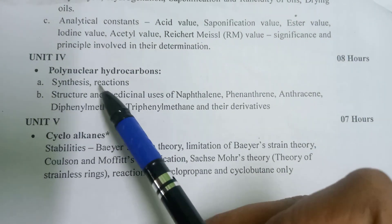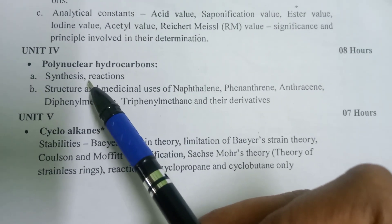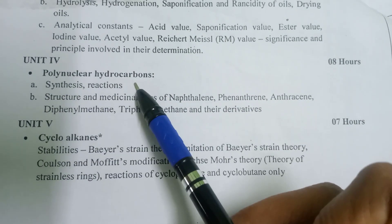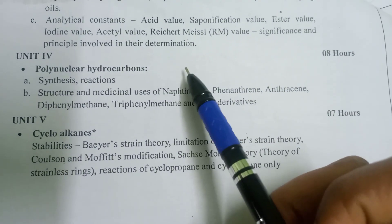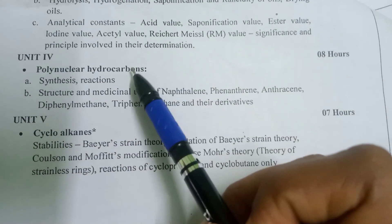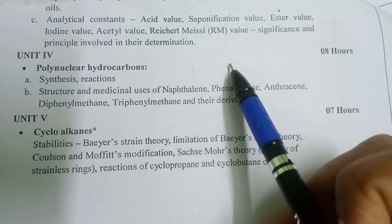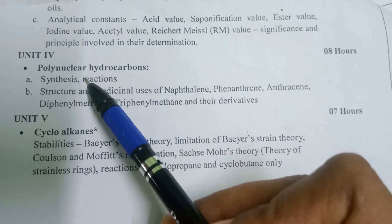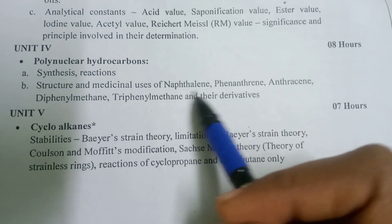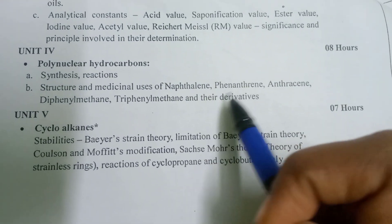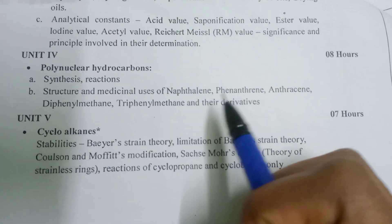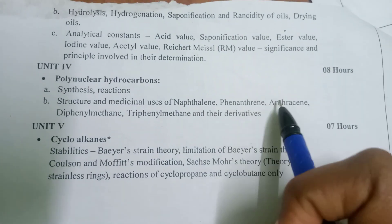The 4th unit covers polycyclic hydrocarbons — benzene rings attached together. The ring structures covered include naphthalene, phenanthrene, anthracene, diphenylmethane, and triphenylmethane.